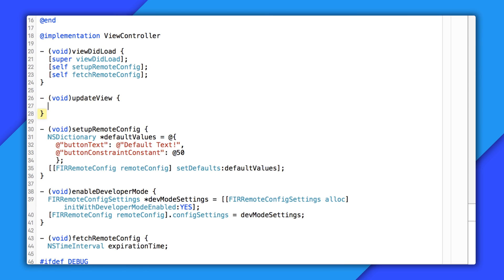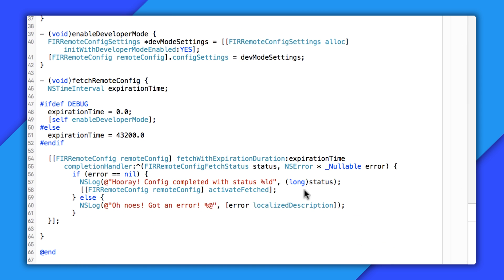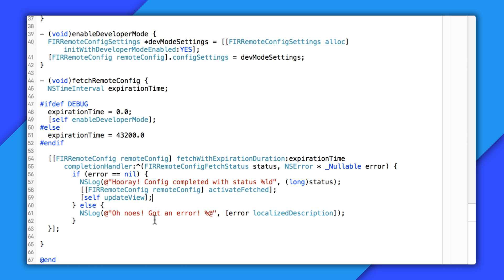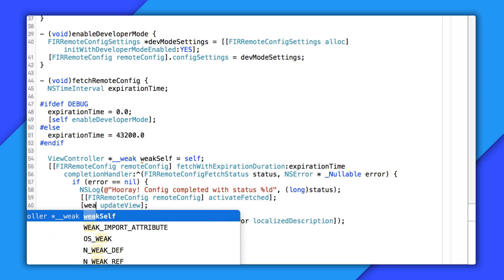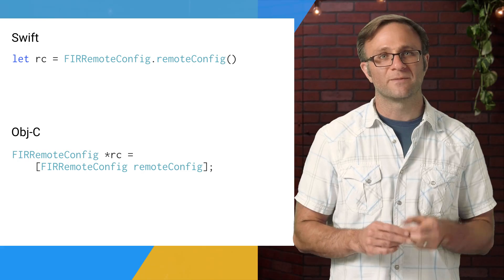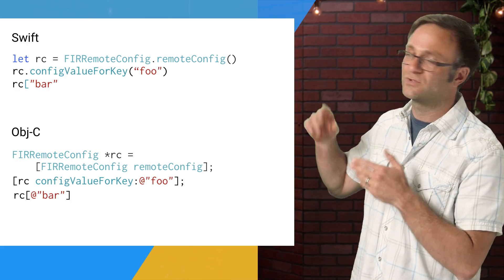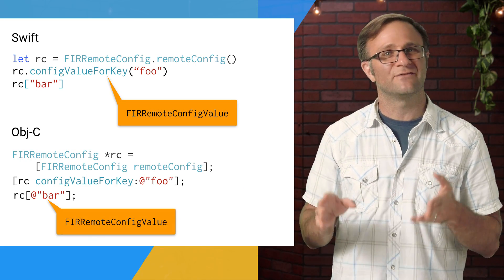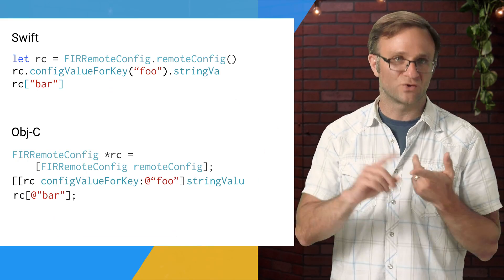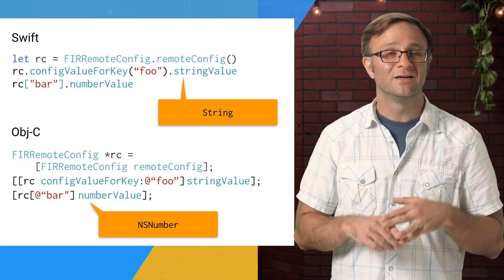I'm going to create a method called updateView, which sets my button text and constraints based on values from Remote Config. I'll call it in two places: right after setting up default values, and again in the fetch callback to apply any new values that come in. Calling self from within a block like this could lead to a retain cycle, so I'll add a weak self reference. Grabbing values from Remote Config is straightforward — call configValueForKey, which retrieves the corresponding value. You can also access values directly with bracket notation, which is a little nicer. These values have a type of RemoteConfigValue — similar to NSObject — and you call follow-up methods like stringValue, numberValue, or dataValue to convert to a usable type. It's up to you to know what type you're expecting so Remote Config can parse it correctly.